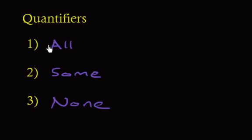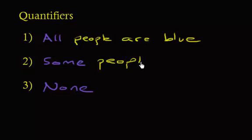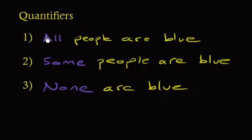Now what we're going to do is go over how to negate these. I'm going to use a very simple example for each one — it might sound kind of ridiculous, but I think it will do. So let's say our first statement is all people are blue, then we'll have some people are blue, and then no one or none are blue. This is going to be the example we use, and we're going to go over how to negate these three.